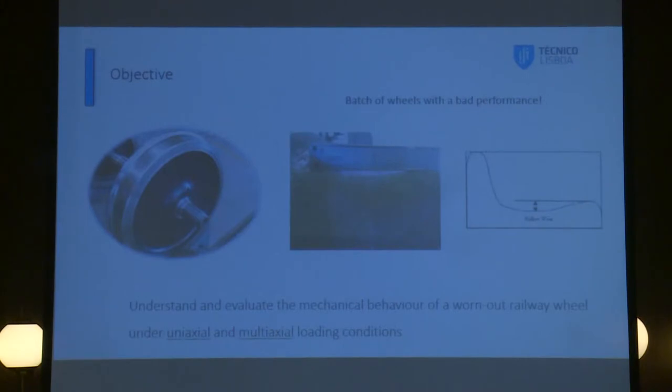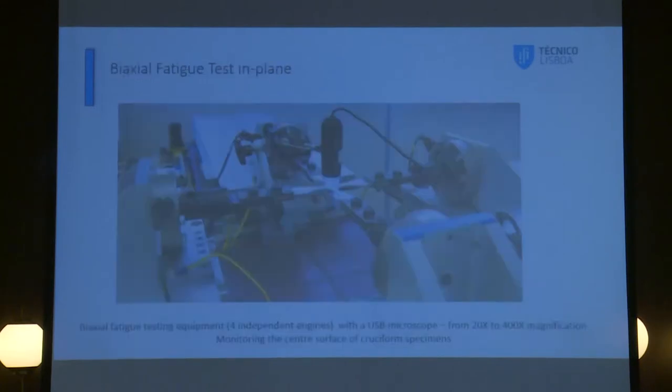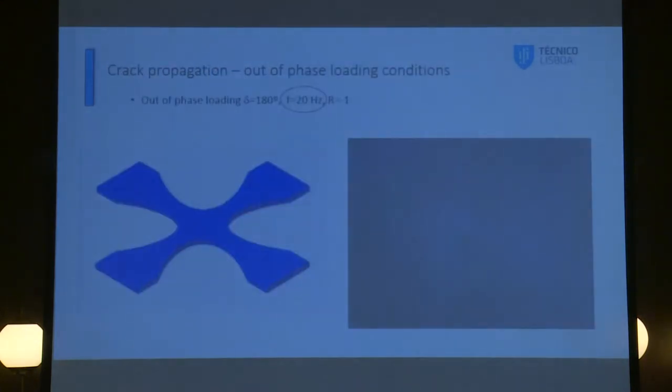Let me present some machines that we have in our lab where the tests were performed. This is the biaxial machine. We have two independent axes, the torsional one and the axial one. And this is the biaxial extensometer that allows us to perform the tests in strain control to compute the cyclic properties of the material.